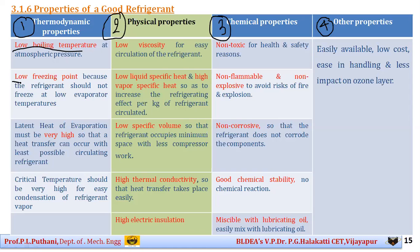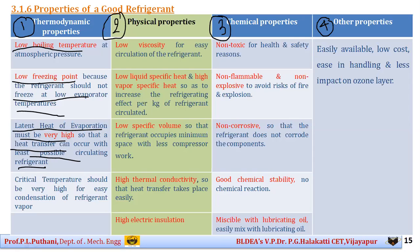The second thermodynamic property is a low freezing point. If the refrigerant has a low freezing point, it will not get frozen when operated at low evaporator temperatures — this is an advantage. Third, the refrigerant should have a latent heat of vaporization as high as possible. Latent heat of vaporization is the heat required for transformation from liquid phase to vapor phase. If this is very high, heat transfer can occur with the least possible circulating refrigerant.